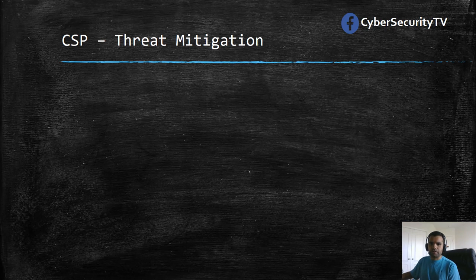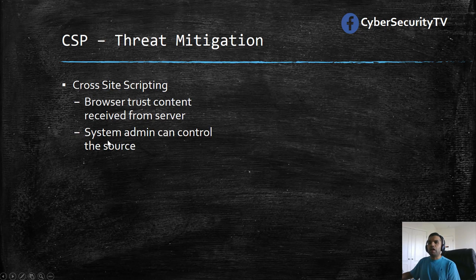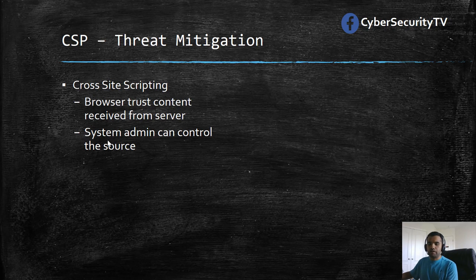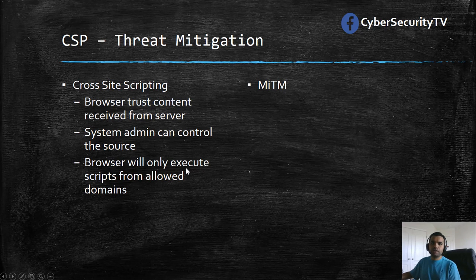One of the threats CSP protects against is XSS. XSS exploits the browser's trust of content received from the server — whatever the server gives the browser, the browser trusts and executes. As a system admin, you can control which sources to trust. The source could be example.com or you could block a malicious domain. The browser will only execute scripts from the allowed domain, so it will not execute any malicious or third-party injected scripts.